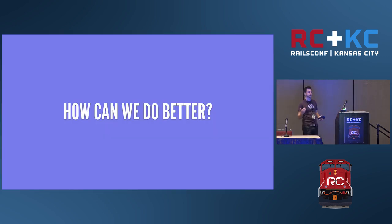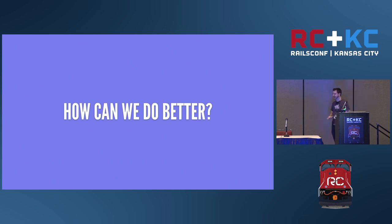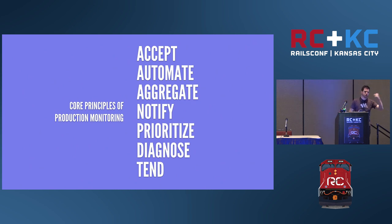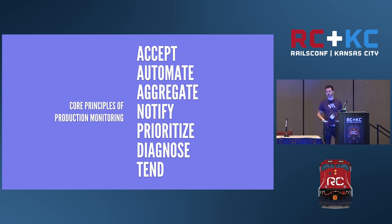So we've gone through the sins — things that every company, every team, every person has at least one of. But how can we do better? I've got a set of rules that I think is a framework for either building production monitoring, choosing a tool, or getting better in your own company and teams. These are core principles that can be applied across all three areas of monitoring — not just error monitoring, not just performance, not just availability.